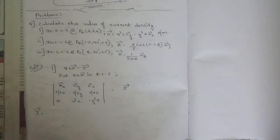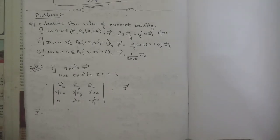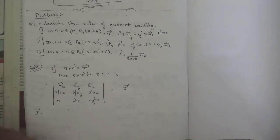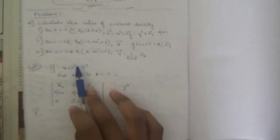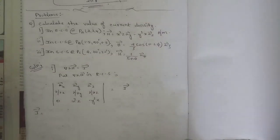Hello everyone, welcome to this new session. In the last session we discussed Stokes' theorem. Today is the last session of this module. We are going to solve one problem related to current density found through Ampere's law — the relation del cross H equals J — and after that one problem related to Stokes' theorem. So two problems in this session.